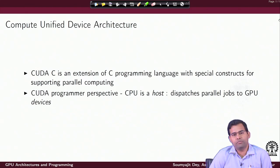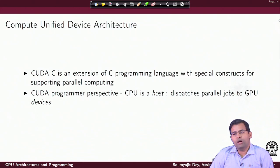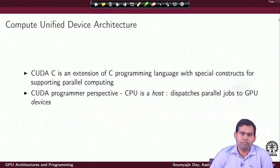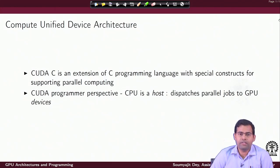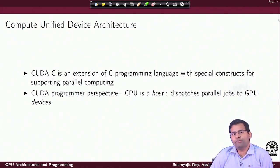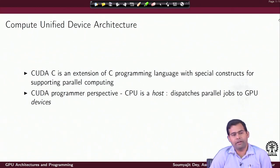NVIDIA GPUs are very popularly used as accelerating devices in conjunction with high performance CPUs. For the CUDA programmer, the perspective is that the CPU is a host — meaning the CPU has an orchestrator program which is running and dispatching parallel jobs to GPU devices. There may be more than one GPU device attached to a CPU, so it can dispatch multiple parallel jobs to these GPU devices. These jobs will execute on the devices and return results to the host.